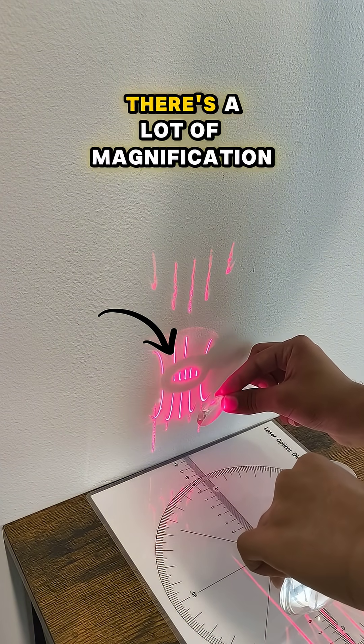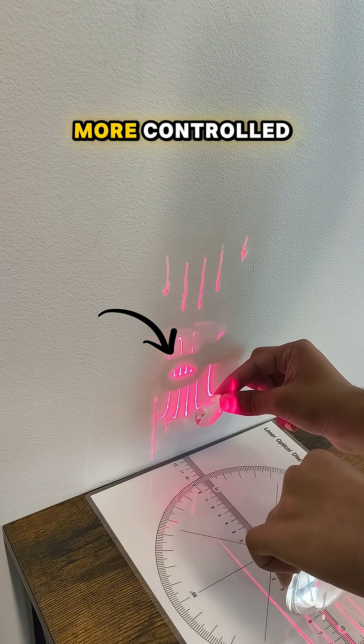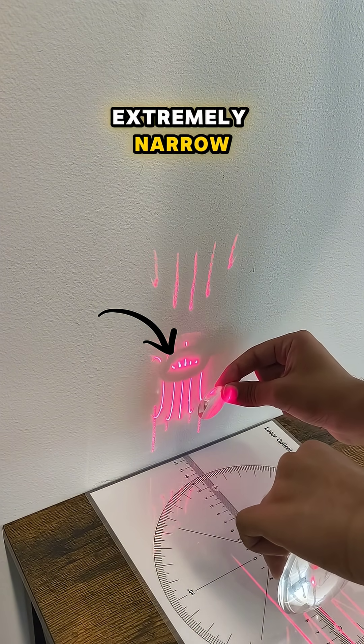As you can see there's a lot of magnification and the error is far more controlled, but the field of view is extremely narrow.